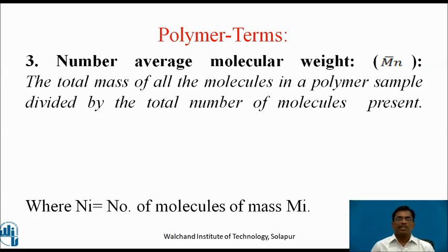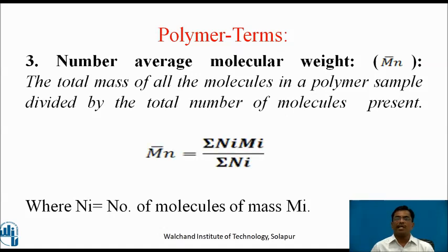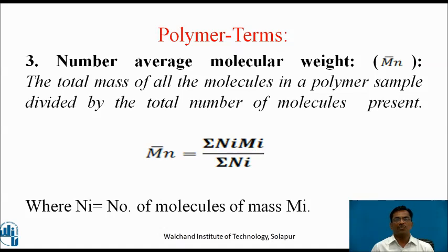Third term: number average molecular weight, represented by M̄n. It is the total mass of all the molecules in a polymer sample divided by the total number of molecules present. Mathematically, M̄n = ΣNiMi / ΣNi, where Ni is the number of molecules of mass Mi.